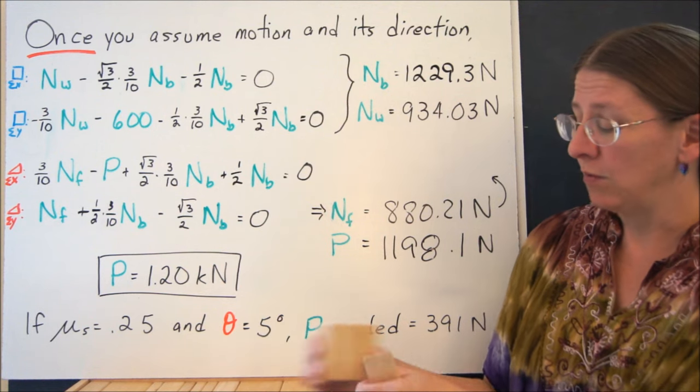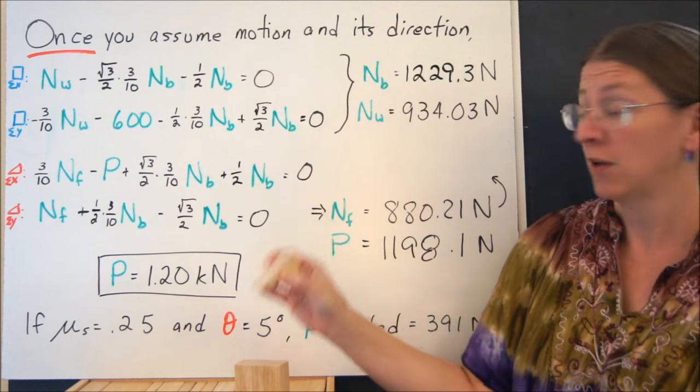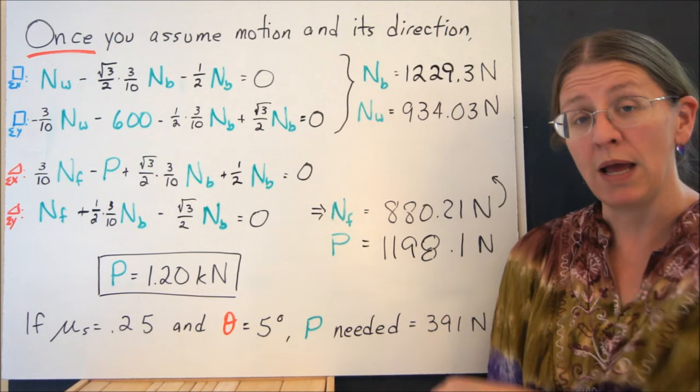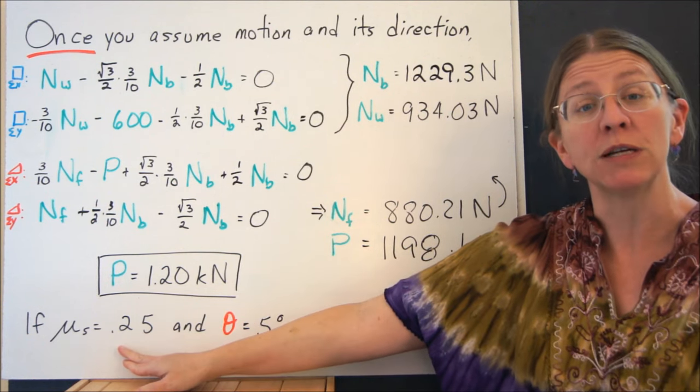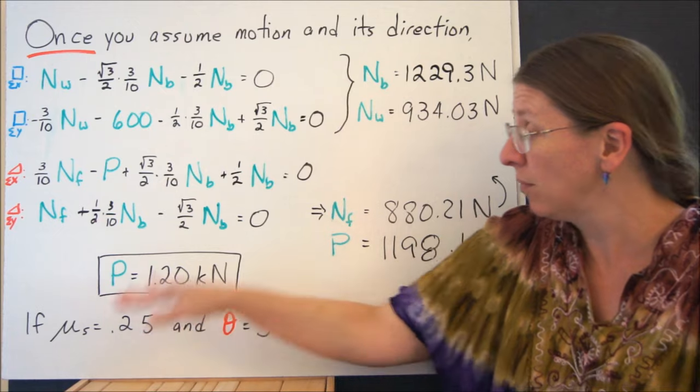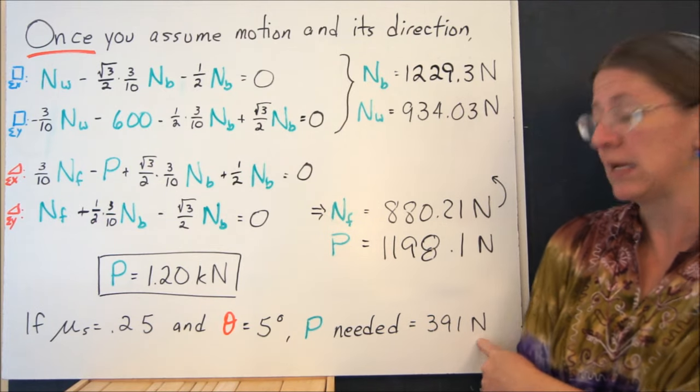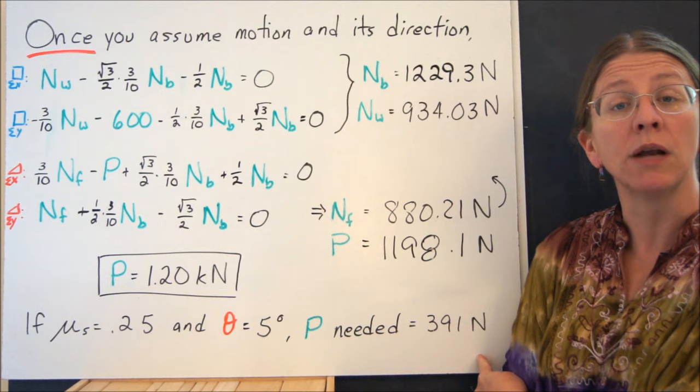In fact, we used a 30 degree wedge because it's easy to draw pictures of. If you make a much smaller wedge or a more slippery surface, these numbers all play into here. So that's just one more example where P ends up being only 391.